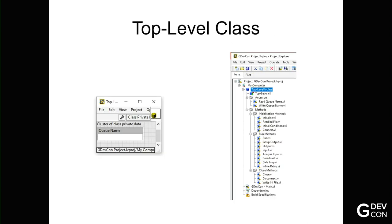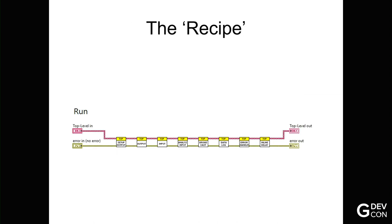So you've now got a top-level class. The only data member at this moment is a queue name. Everything in the system, every actor has to have a unique queue name for it to work properly. On the right-hand side there, you've got your class. You can see I've got my accesses for reading and writing the queue name. I've got initialize, read my INI file, initial conditions, connect to my equipment, some run methods, things that I might want to do while it's running, and then the close, disconnect, and write to INI file. So most of those are empty. So it really only takes you about 10 minutes to create that. And that is your recipe.